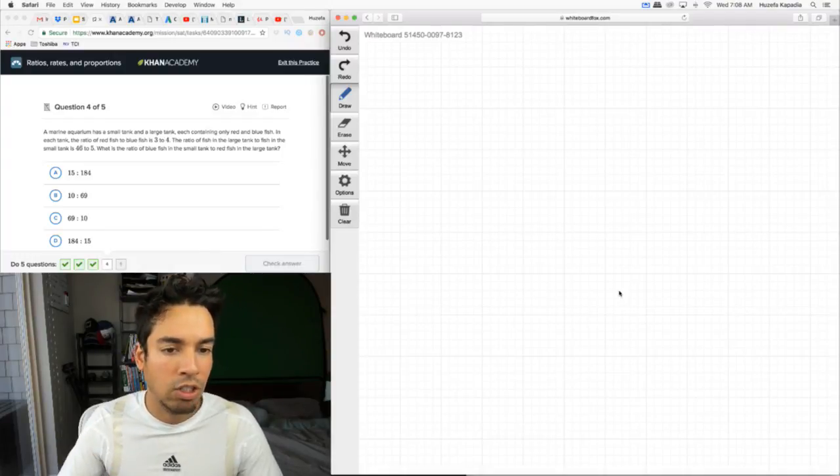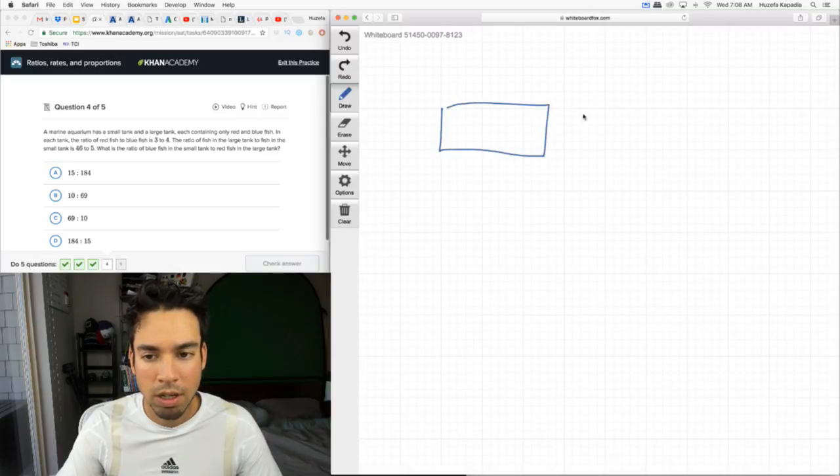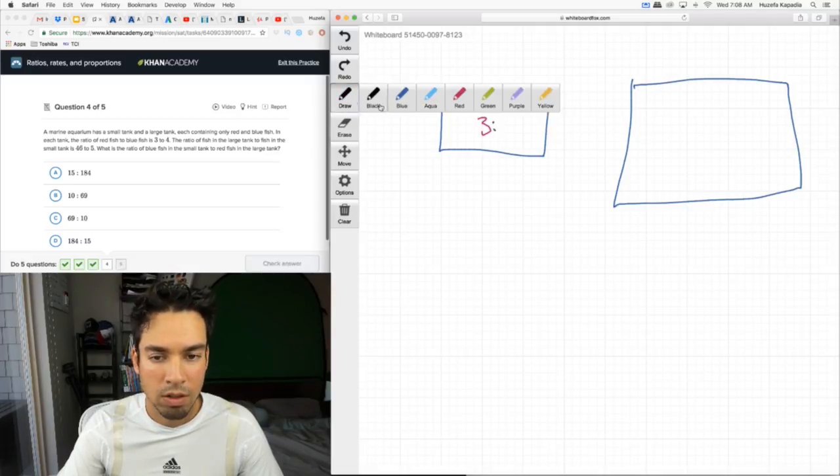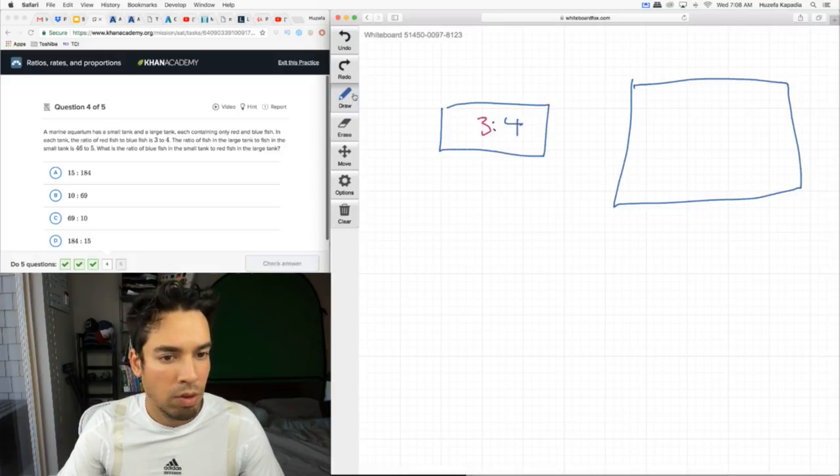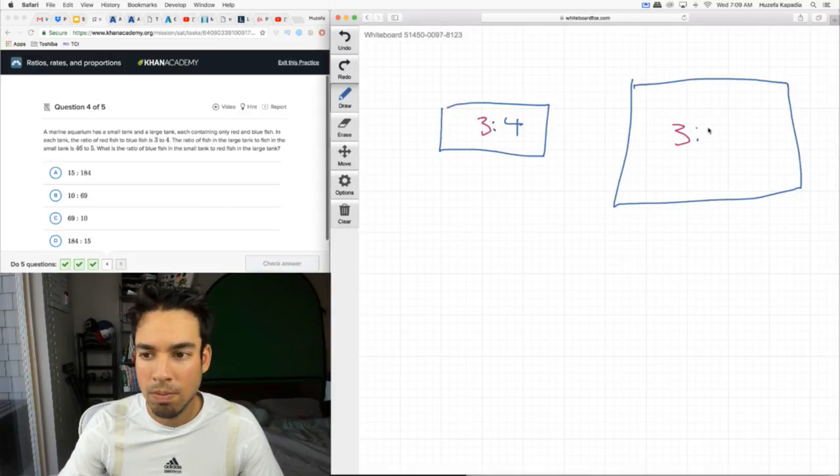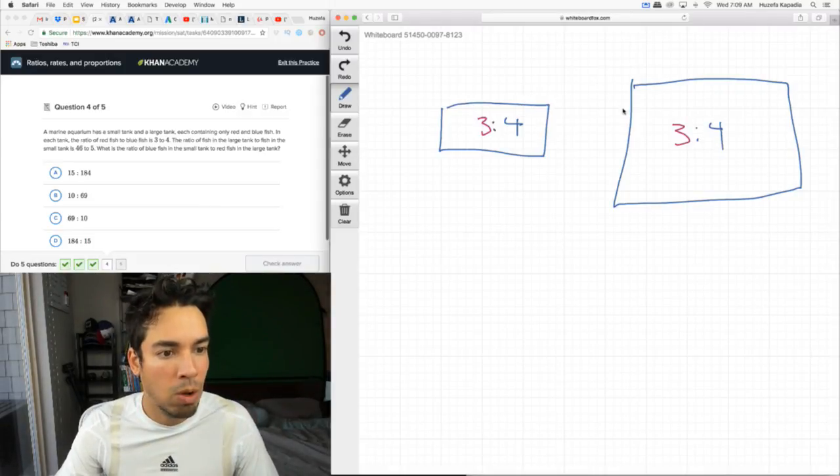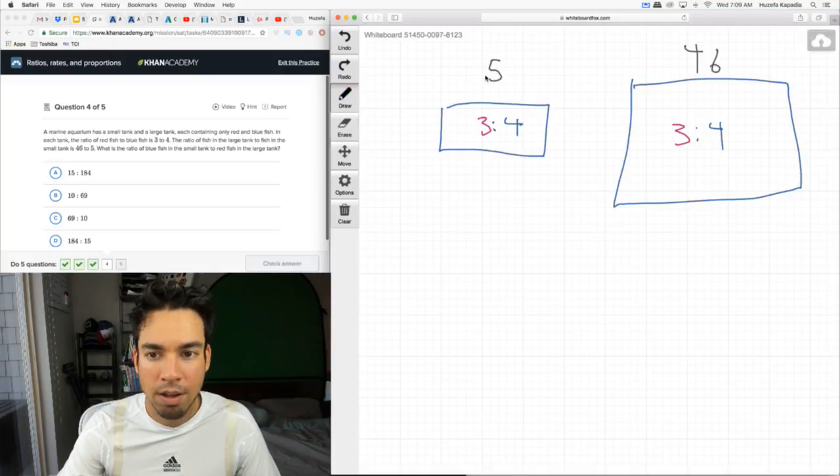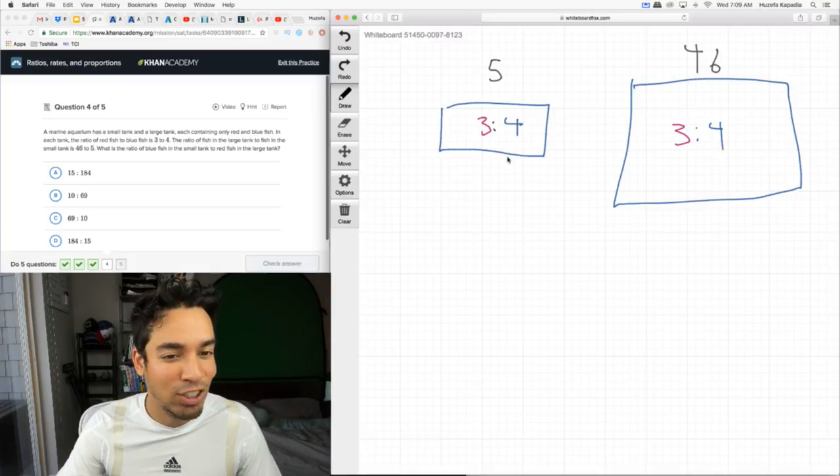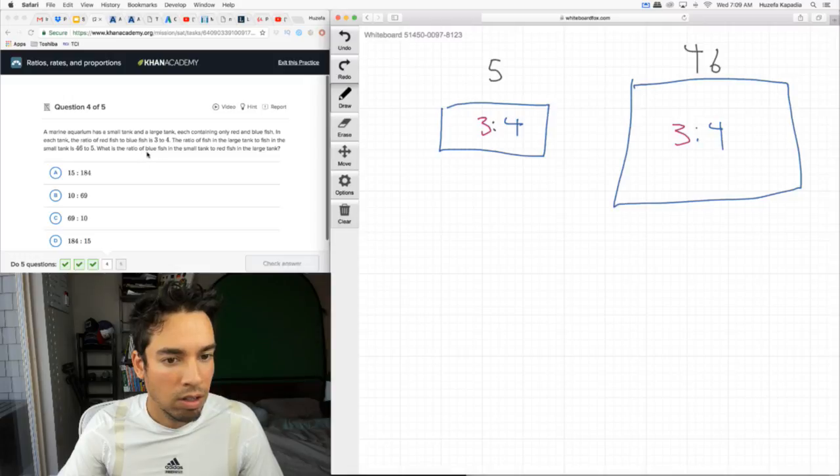A marine aquarium has a small tank and a large tank, each containing only red and blue fish. Let's draw a small tank and a large tank. In each tank, the ratio of red to blue is 3 to 4. The ratio of fish in the large tank to the fish in the small tank is 46 to 5. What is the ratio of the blue fish in the small tank to the red fish in the large tank? So blue fish in the small tank to red fish in the large tank.